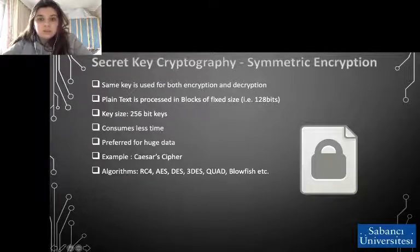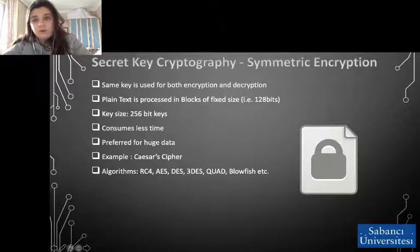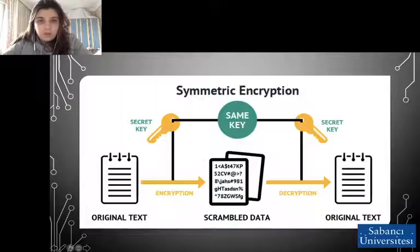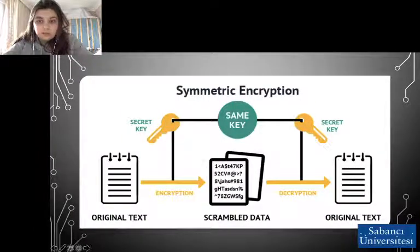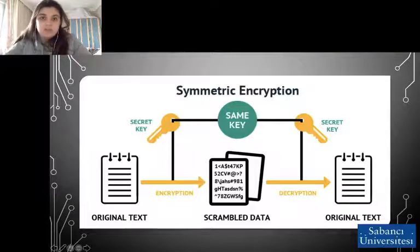The Caesar cipher is the oldest non-symmetric encryption. Some symmetric encryption algorithms include, but are not limited to: RC4, AES, DES, 3DES, QUAD, and Blowfish. Here is an example scenario where a single key encrypts the plain text — the original text — and that same key is used for decryption, which decrypts the ciphertext — scrambled data — and reveals the plain text.